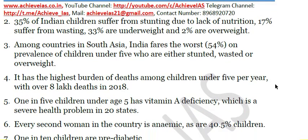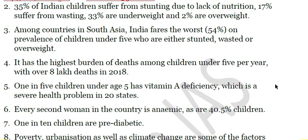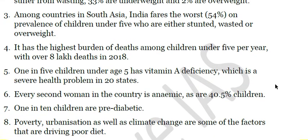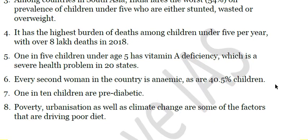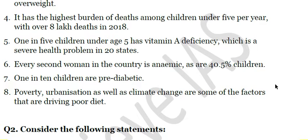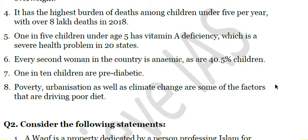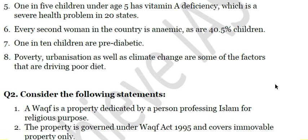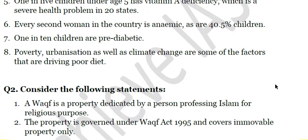India-specific data: every second child is affected by some form of malnutrition. 35% suffer from stunting (low height for age), 17% suffer from wasting (low weight for height), 33% are underweight, and 2% are overweight. Among South Asian countries, India fares the worst — 54% of children under five are either stunted, wasted, or overweight. India has the highest burden of deaths among children under five, with over 8 lakh deaths in 2018. One in five children has vitamin A deficiency, every second woman is anemic, as are 40.5% of children, and one in ten children is pre-diabetic.